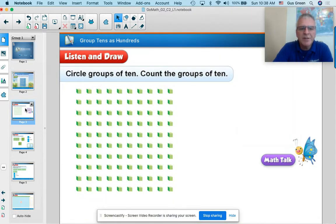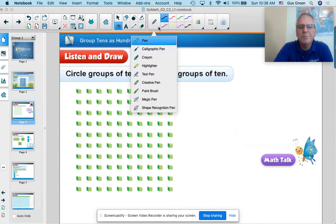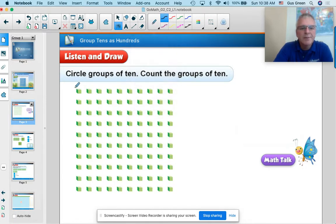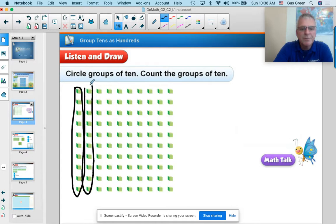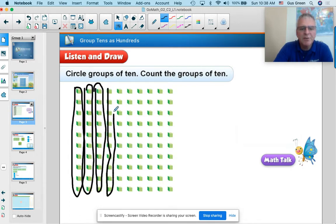The first question in the listen and draw section is pretty simple. It's just circle groups of tens and then count the groups of tens. So I'm going to take my pencil. I'm going to do this pretty quickly. So these rows are already in tens, and so I'm just going to loop the rows, excuse me, columns. I'll loop the columns, and I could just continue to do this in groups of tens.